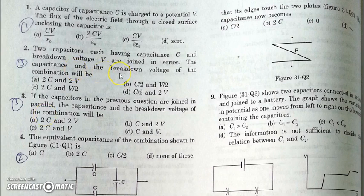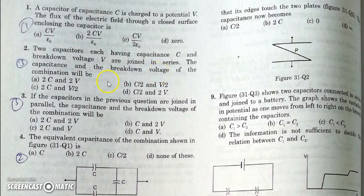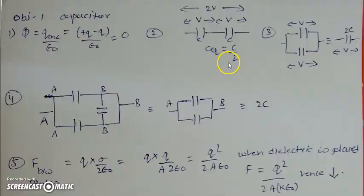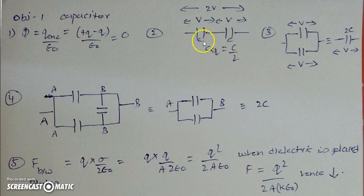We have to find the equivalent capacitance and equivalent breakdown voltage of the series combination. In this configuration, the combination will be able to bear a voltage of 2V, and the equivalent capacitance will be C/2.